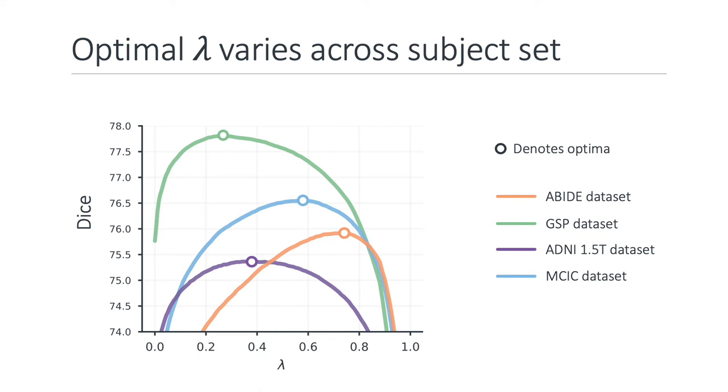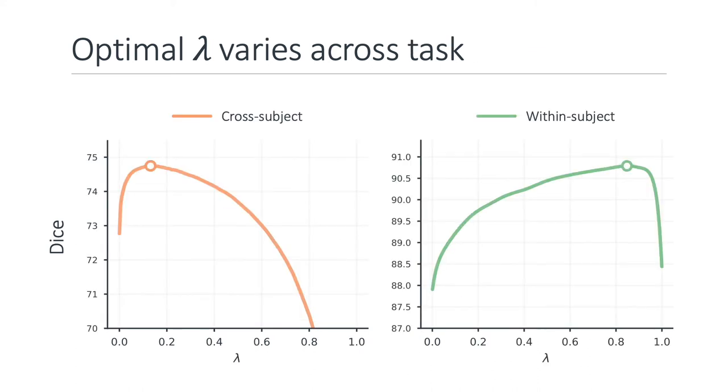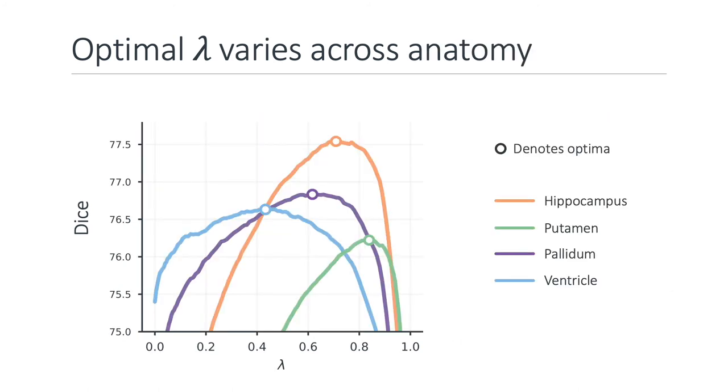We see this same effect when testing across different image contrast pairs. T1 to T2, T2 to T2, and multi-flip angle registrations all require different optimal values. Using the multi-flip angle optima would decrease potential T2 accuracy by 5%. When we evaluate across registration tasks, we show that within-subject alignments benefit substantially more from regularization compared to cross-subject alignments. Even for different anatomical regions, we again find this vast variance in optimal lambdas. All of these results highlight the necessity to adapt hyperparameters on the fly. This is where HyperMorph can play a serious role since it can do exactly this, all without the need to retrain any models.